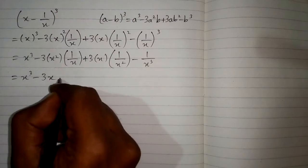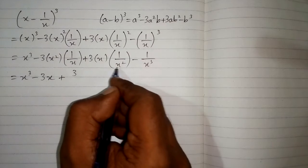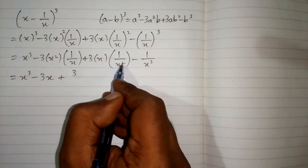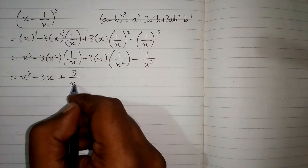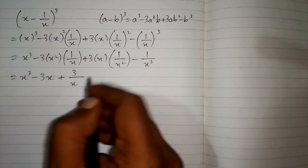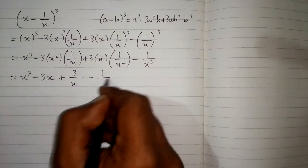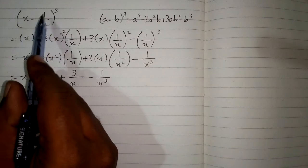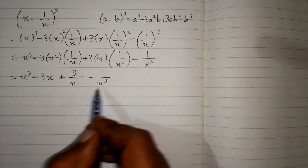So 2 minus 1 is 1, giving us x to the power 1, or simply x. Then plus 3 times 1 over x to the power 1, which is simply 3 upon x. And minus 1 upon x cubed. Therefore, the cube of x minus 1 upon x is: x cubed minus 3x plus 3 upon x minus 1 upon x cubed.